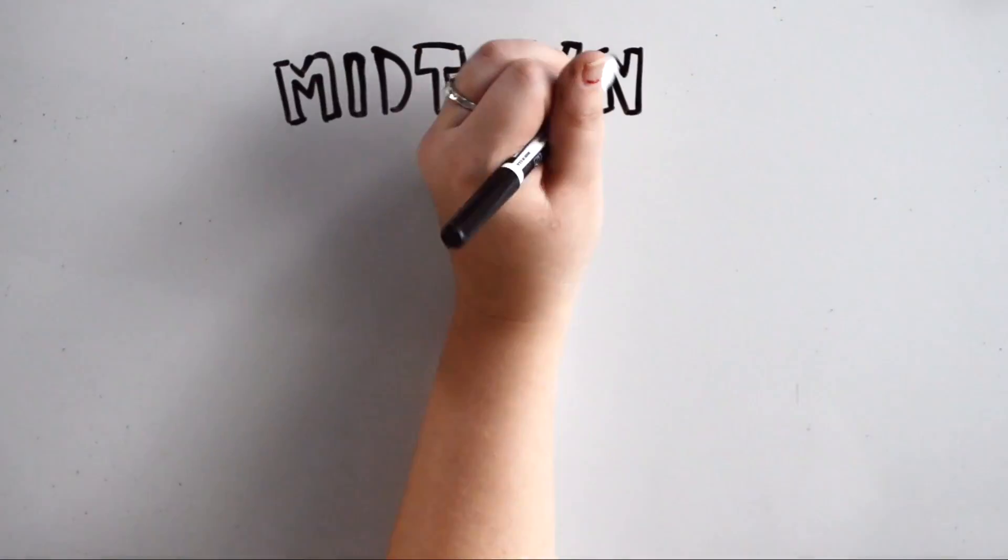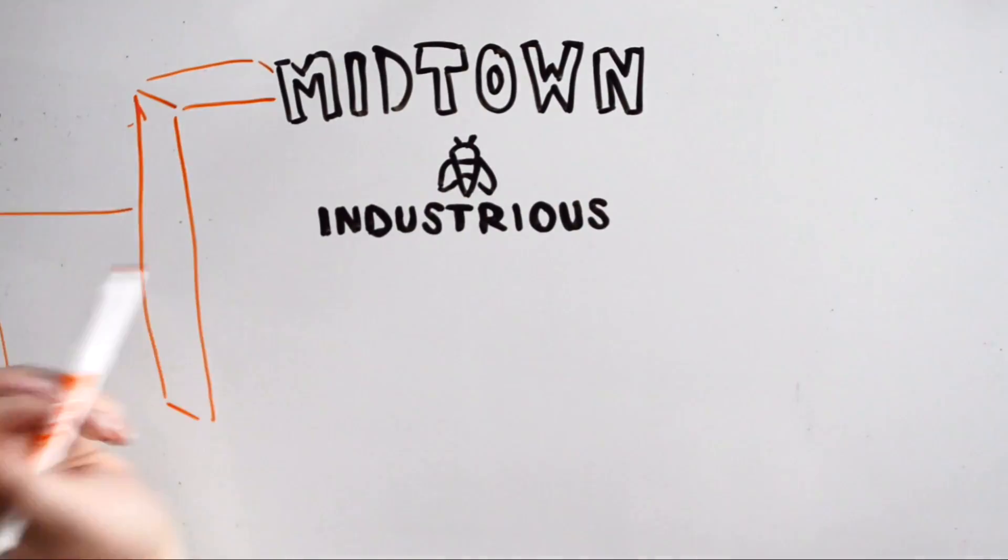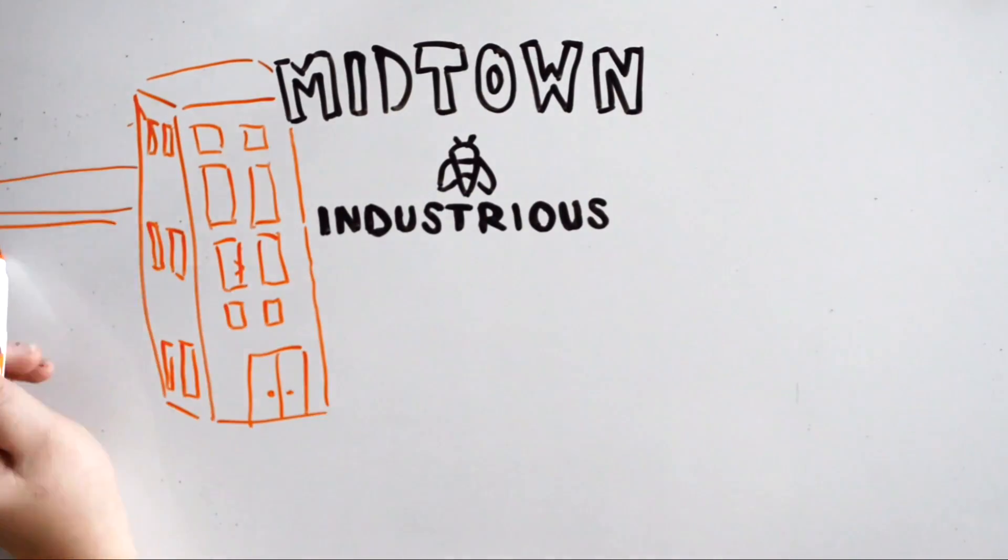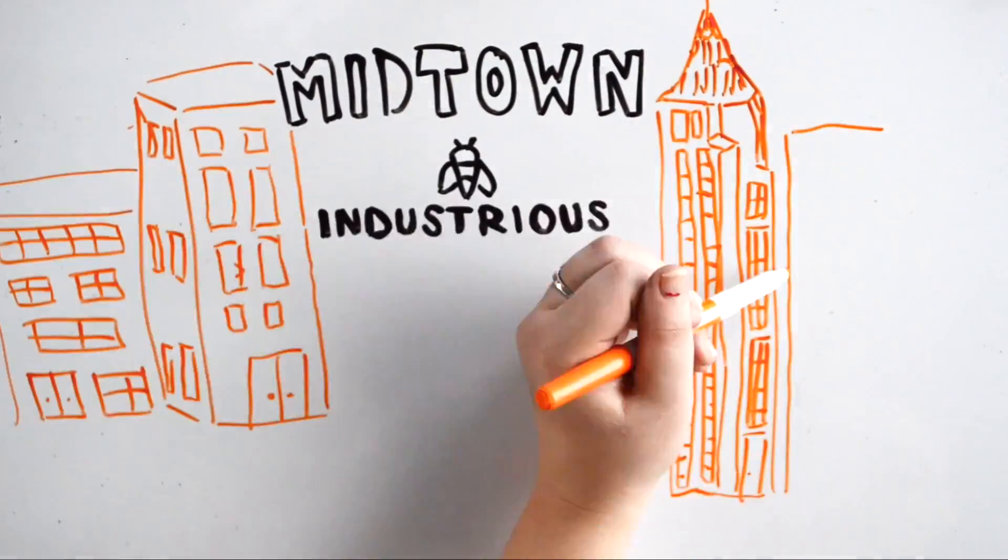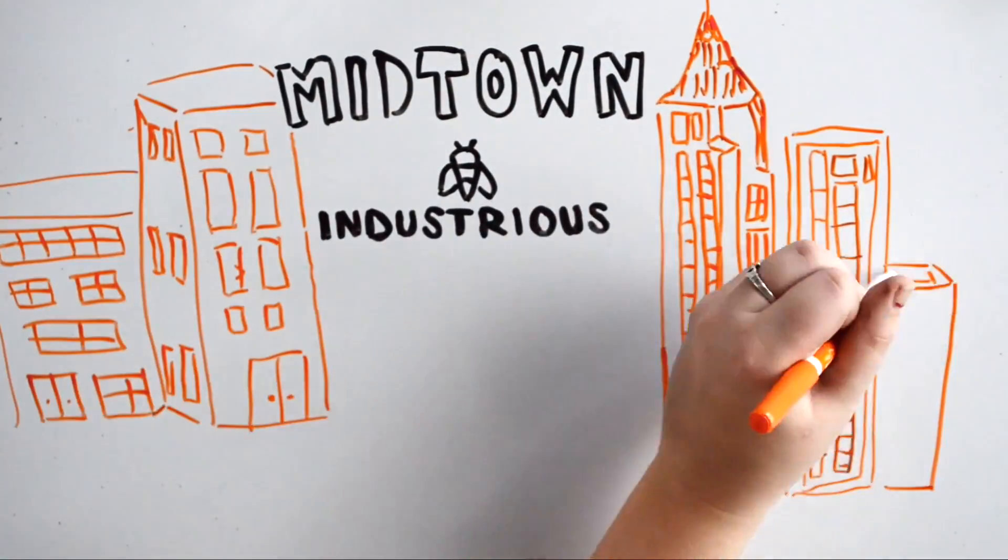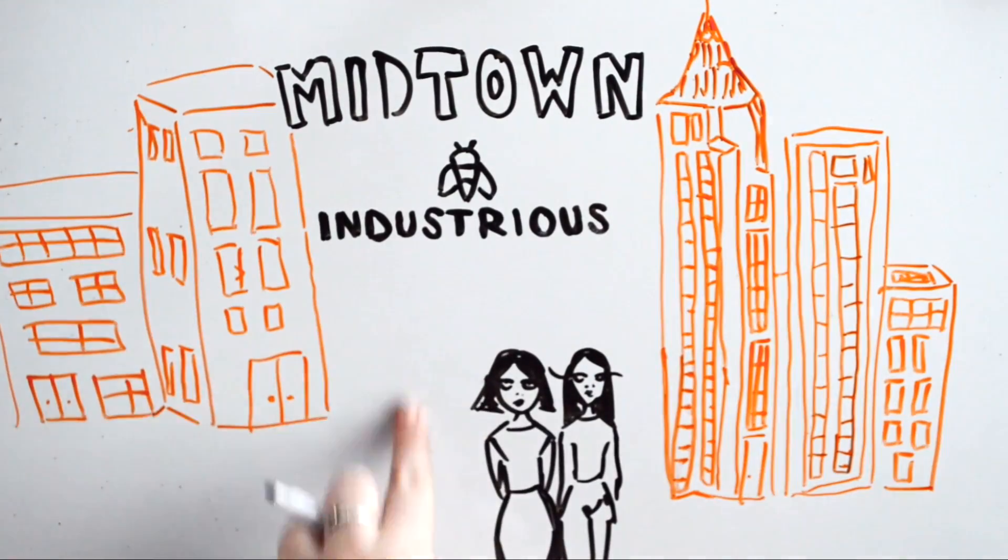We made our way and put our foot in the ground at Industrious Midtown, their location, which was exciting because we had our first great view. Our first great view and our first maybe 100 square foot office. But we certainly squeezed four of us in a 100 square foot space, which was awesome. We were using our resources wisely.